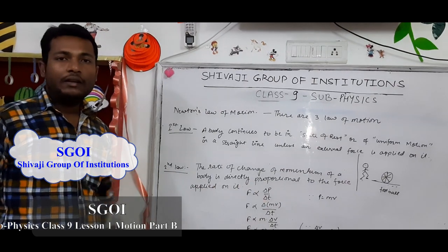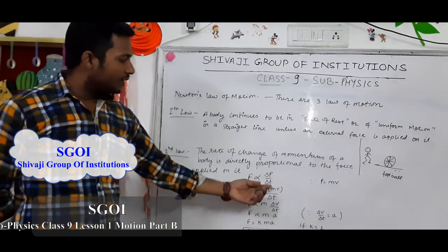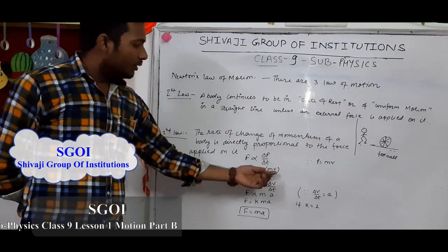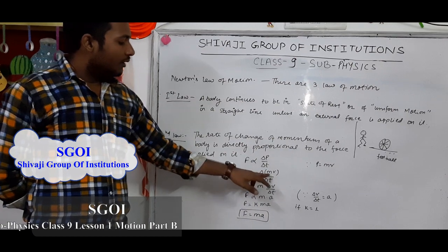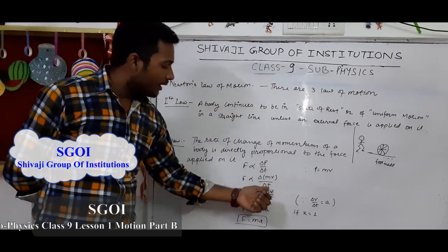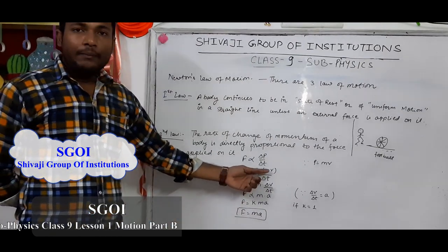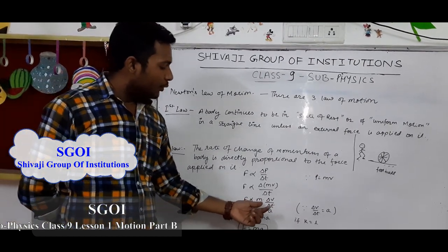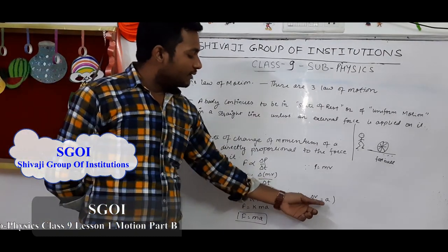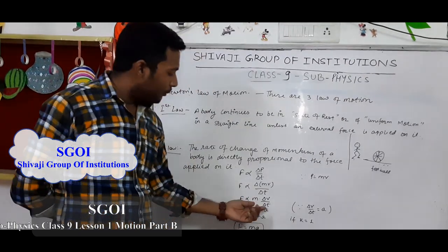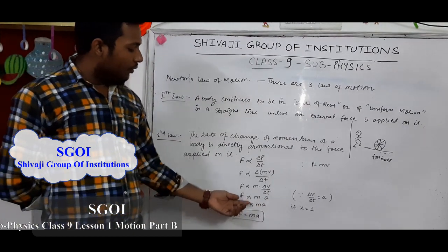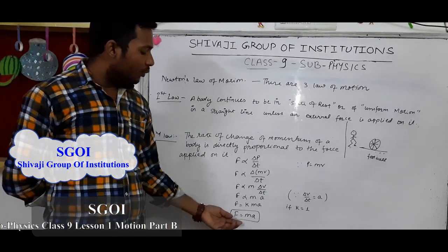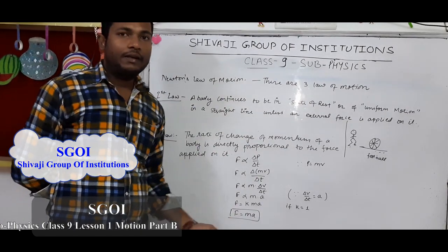F is directly proportional to delta P divided by delta T, where P is momentum and T is time. We know the formula P equals MV, that is momentum equals mass multiplied by velocity. Substituting, F is directly proportional to M times delta V divided by delta T. Since the mass of the object is constant, it comes out of the delta. We know acceleration A equals delta V divided by delta T, so F equals KMA, where K is a constant. When K equals 1, the formula F equals MA is derived. This is the second law of motion.